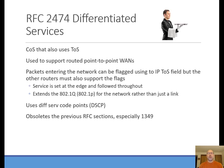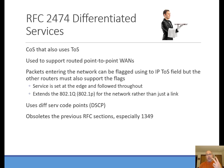RFC 2474 is differentiated services. What we're talking about here is that type of service field in the IP header, but we're going to change its use a little bit. Packets entering the network get flagged, and the values we flag them with go in that type of service field — though it's not called type of service anymore. A lot of times we're also going to marry what's happening at layer 2 on up to layer 3, extending the 802.1Q priority field into layer 3.